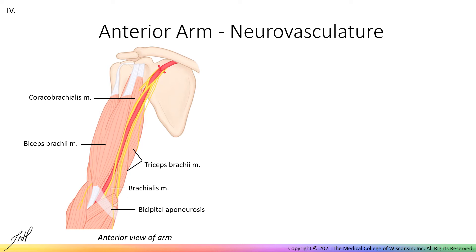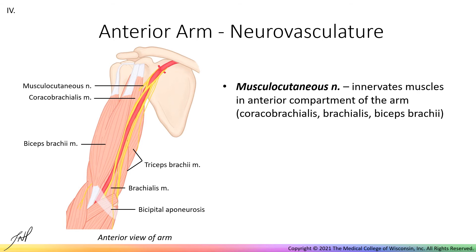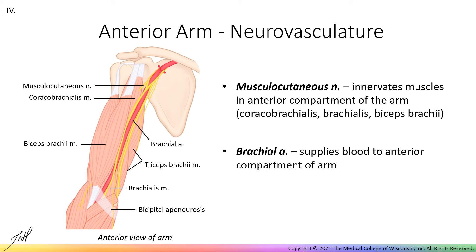Innervation from nerves and blood from nearby arteries allows these muscles to function. The musculocutaneous nerve innervates all three muscles in the anterior compartment of the arm. It branches off the lateral cord of the brachial plexus and immediately pierces the coracobrachialis muscle before going on to innervate the other two muscles, brachialis and biceps brachii. The brachial artery supplies blood to the anterior compartment of the arm and runs with the median and ulnar nerves in the bicipital groove, which is the indentation on the medial arm between the anterior and posterior compartments. Note that a pulse from the brachial artery can be found in this groove — try to find it on yourself.